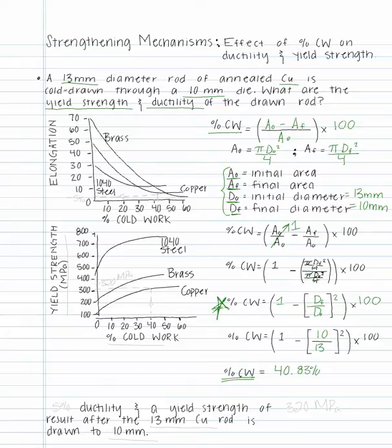Now that we have the percent cold work for the given initial and final diameters, we will approximately locate 41% on the percent cold work in elongation plot, draw a vertical line up to the copper curve and then a horizontal line over to the elongation axis. This yields approximately 5%.